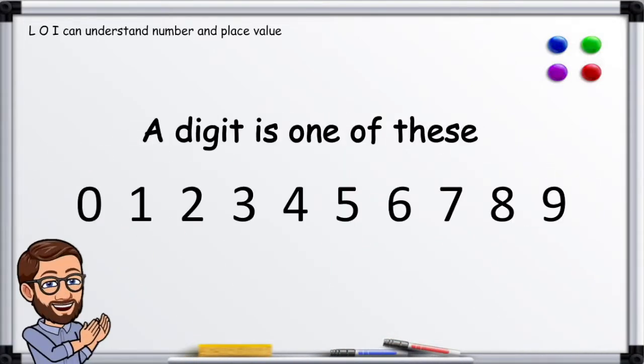A digit is one of these: 0, 1, 2, 3, 4, 5, 6, 7, 8, and 9. It's important to remember that 0 is also a digit.